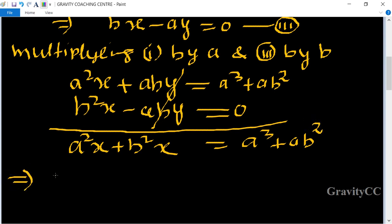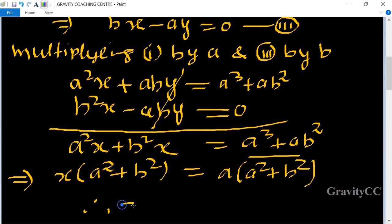We take x as common, so x(a² + b²), and in this part a as common, so we get a(a² + b²). Therefore x = (a² + b²)/(a² + b²), which cancels to equal a.